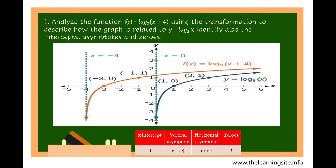Analyze the function f(x) is equal to log of x plus 4 to the base of 3 using the transformation to describe how the graph is related to y is equal to log of x to the base of 3. Identify also the intercepts, asymptotes, and zeros. From the graph, you can observe that the graph is moved 4 units to the left. The x-intercept is negative 3, or that is the point (negative 3, 0), and the zeros is negative 3. The vertical asymptote is x is equal to negative 4.